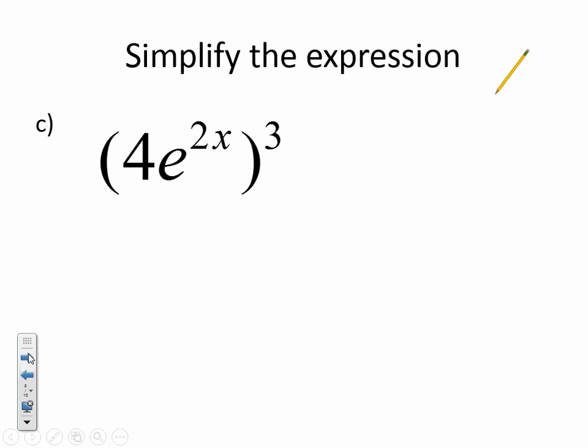Moving on to our last one, we're simplifying this expression. Same rules apply for rules of exponents. There's a 1 here, so I have to put my 3 here and here. So I'm going to get 4 to the third power times E. Now, 3 times 2 is 6, so I'm going to have 6X. Only thing I can do to simplify this one is 4 to the third power is 64. And I'm going to keep it as E to the sixth X.